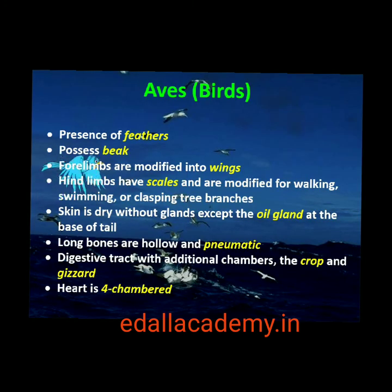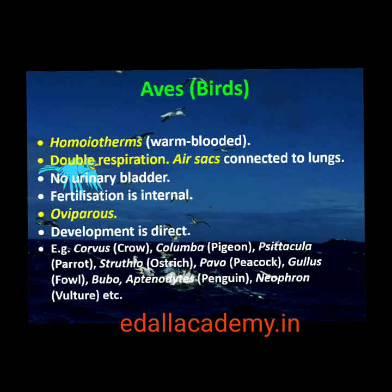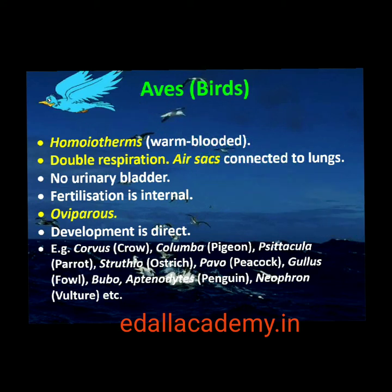Sixth is class Aves. The characteristic features of aves (birds) are the presence of feathers and most of them can fly, except flightless birds, for example ostrich. They possess a beak. The forelimbs are modified into wings. The hind limbs generally have scales and are modified for walking, swimming or clasping tree branches. Skin is dry without glands except the oil gland at the base of the tail. Endoskeleton is fully ossified (bony) and the long bones are hollow with air cavities (pneumatic). The digestive tract has additional chambers — the crop and gizzard. Heart is completely four-chambered. They are warm-blooded, homoiothermous animals, able to maintain a constant body temperature. Respiration is by lungs. Air sacs connected to lungs supplement respiration. Sexes are separate. Fertilization is internal. They are oviparous and development is direct.